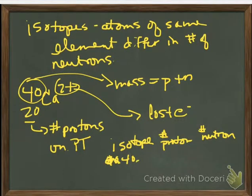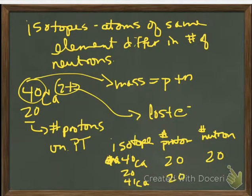Okay, so isotopes. Again, remember the mass number. To get the number of neutrons, you would take that mass number and minus the number of protons. Okay, if I had calcium-41, I would have 20 protons and 21 neutrons.